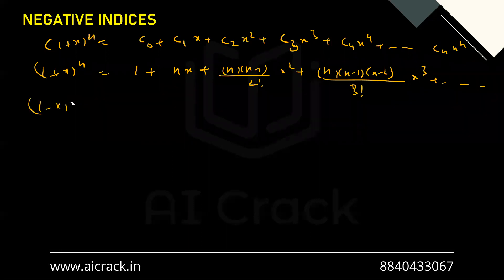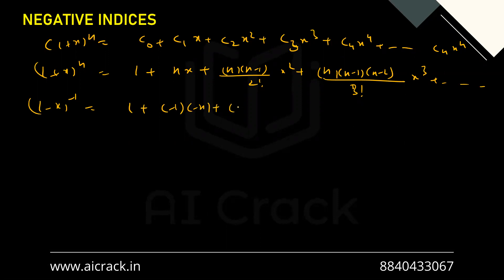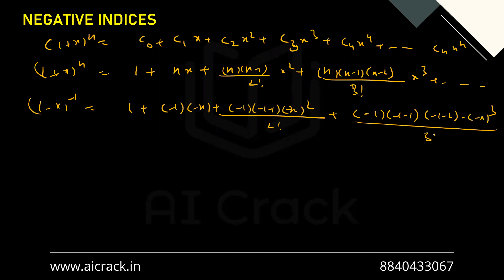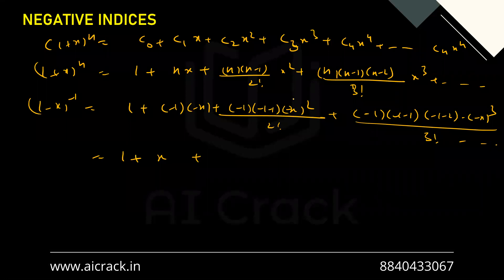Now, if I replace x with −x and n with −1, I get (1−x)^(−1), which expands as: 1 + (−1)(−x) + [(−1)(−1−1)/2!](−x)² + [(−1)(−2)(−3)/3!](−x)³ + ... The negatives cancel: I get 1 + x + x² + x³ + ..., which is exactly our GP series.